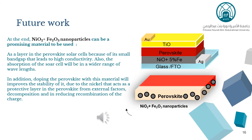Nickel oxide and iron oxide nanoparticles can be a promising material to be used as a layer in perovskite solar cells because of the small band gap that leads to high conductivity. Also, the absorption of the solar cell will be in a wider range of wavelengths. In addition, doping the perovskite with this material will improve its stability due to the nickel acting as a protective layer against external factors, decomposition, and in reducing recombination of charge.